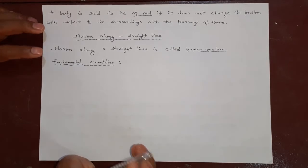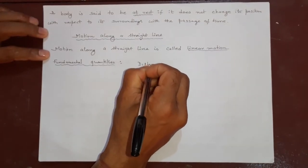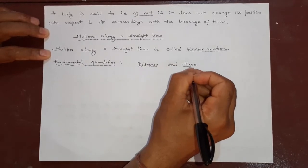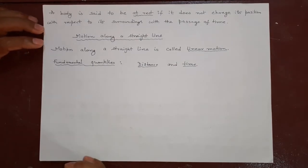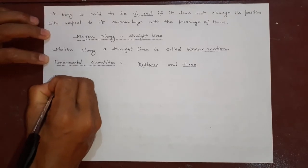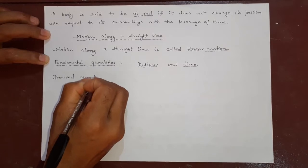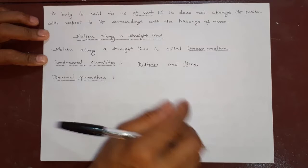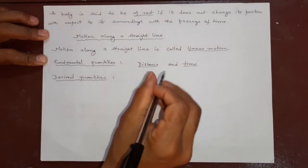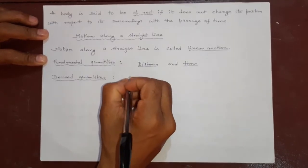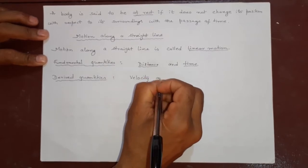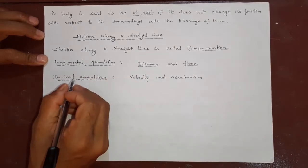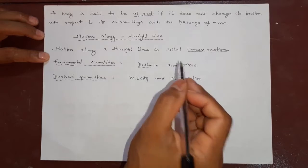To understand motion, the very first introduction requires two things: distance and time. You have to understand these two things to understand what is motion and how it is carried out. There are other quantities — fundamental and derived quantities. Derived quantities are those which you get from other quantities. Distance and time are the starting point; from them we derive velocity (distance divided by time) and acceleration (distance divided by time squared), and many other things.